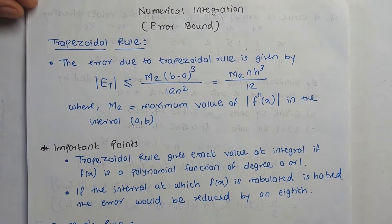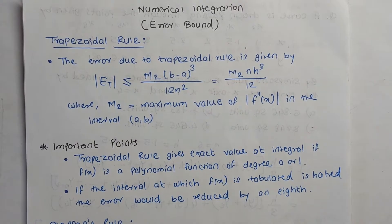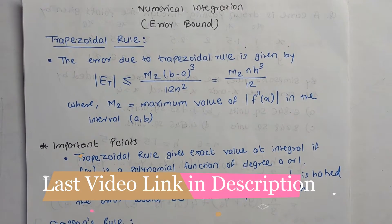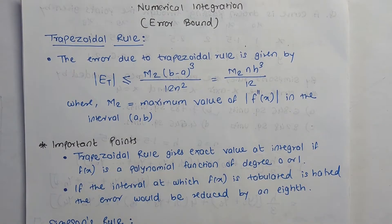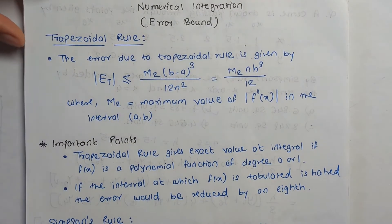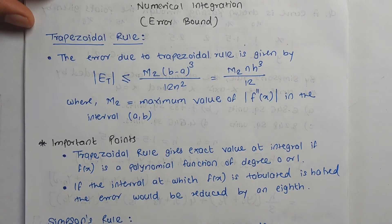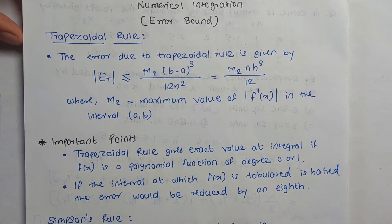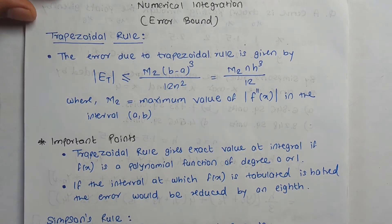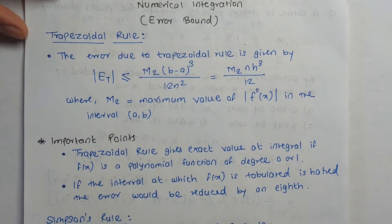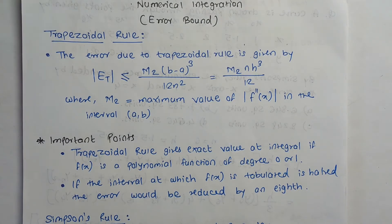Welcome to the new session. Today we are going to discuss numeric integration. As we discussed in the last three videos — trapezoidal rule, Simpson's rule — these are approximation methods for finding integration. Since these are approximation methods, there are some errors. In this video we will learn about what errors occur in the trapezoidal rule as well as Simpson's one-third rule.